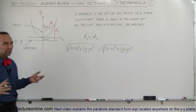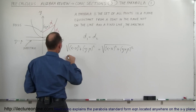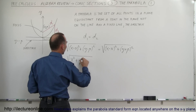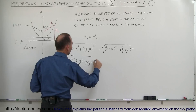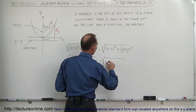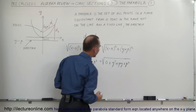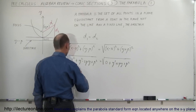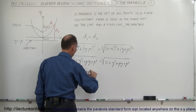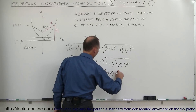Now let's go ahead and simplify that equation with the vertex at the origin. On the left side we get the square root of x squared plus y squared minus 2py plus p squared, and that equals the right side, which is the square root of y squared plus 2py plus p squared. Squaring both sides removes the square root symbols, giving us x squared plus y squared minus 2py plus p squared equals y squared plus 2py plus p squared.